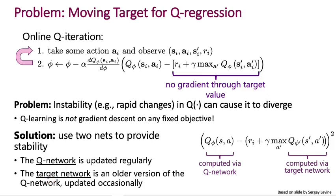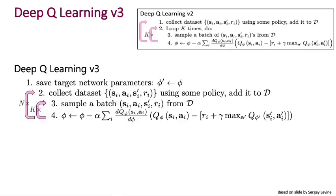So that takes us to deep Q learning v3, which looks a lot like deep Q learning v2, except for that it has this one additional target network trick. So in particular, everything in deep Q learning v2 is in steps 2, 3, 4 over here.